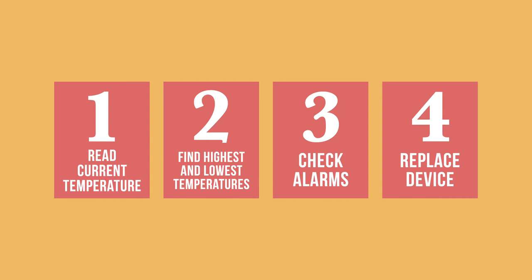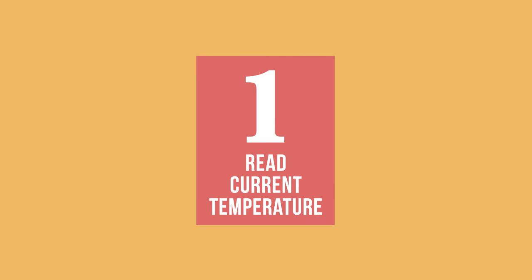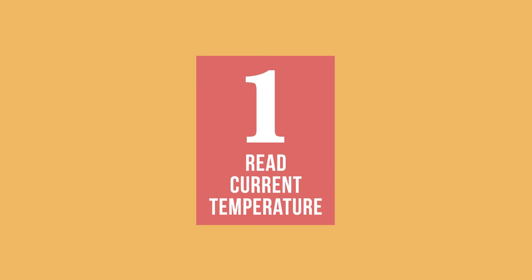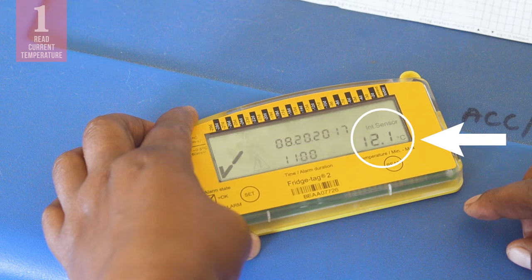So, let us start with the first of these tasks: reading the current temperature on your fridge tag. This is a fridge tag device. To find the current refrigerator temperature, you look here, on the right side of the display.